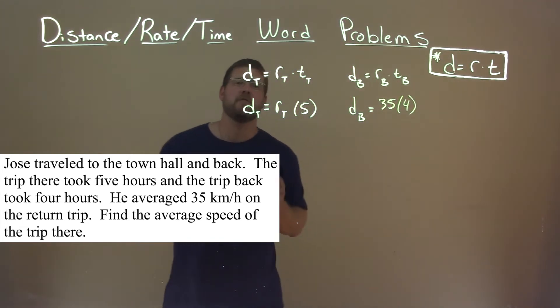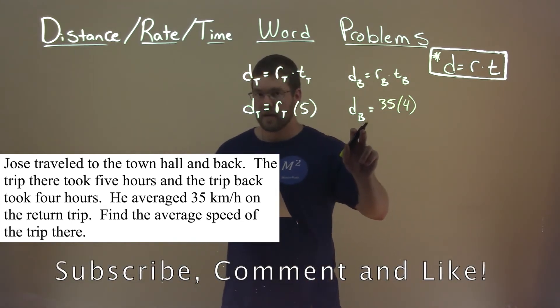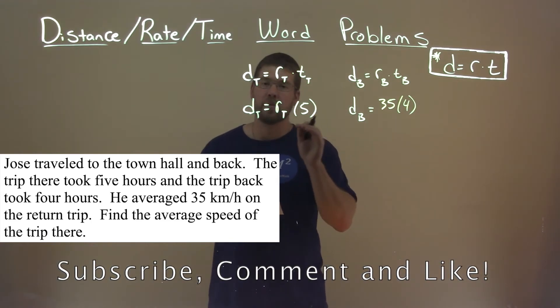And so now we have enough information to solve. We don't know what the distance there was or the distance back, but what we do know is that they're equal. It's the same distance.